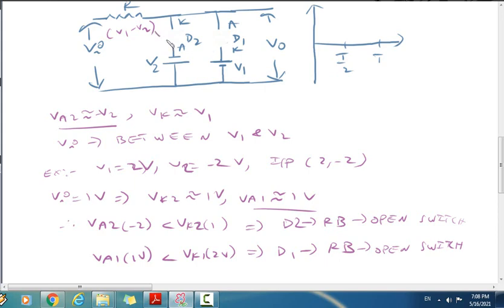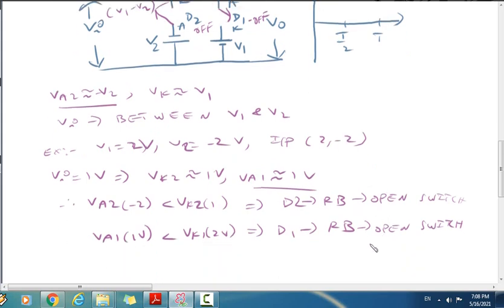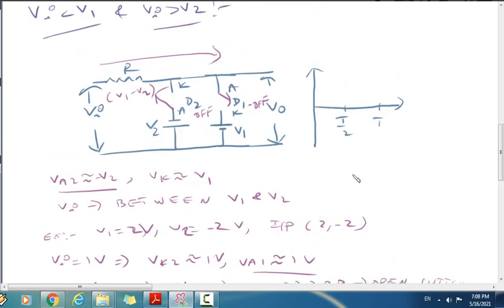When both diodes are off switches, the circuit has both D2 and D1 off. Now the input signal directly goes to the output. Since both switches are off, V0 equals VI.